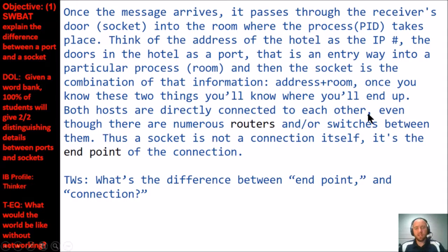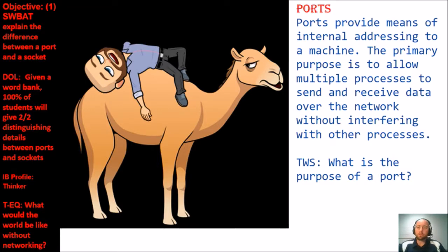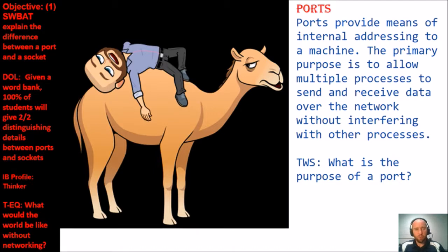Can you tell me the difference between an endpoint and a connection? Ports provide means of internal addressing to a machine. The primary purpose is to allow multiple processes to send and receive data over the network without interfering with each other. Think of your computer when you're chatting on IRC, then jumping to another tab browsing Reddit, then playing an online game like Fortnite — you can have all these processes going on because they're all using different port numbers.